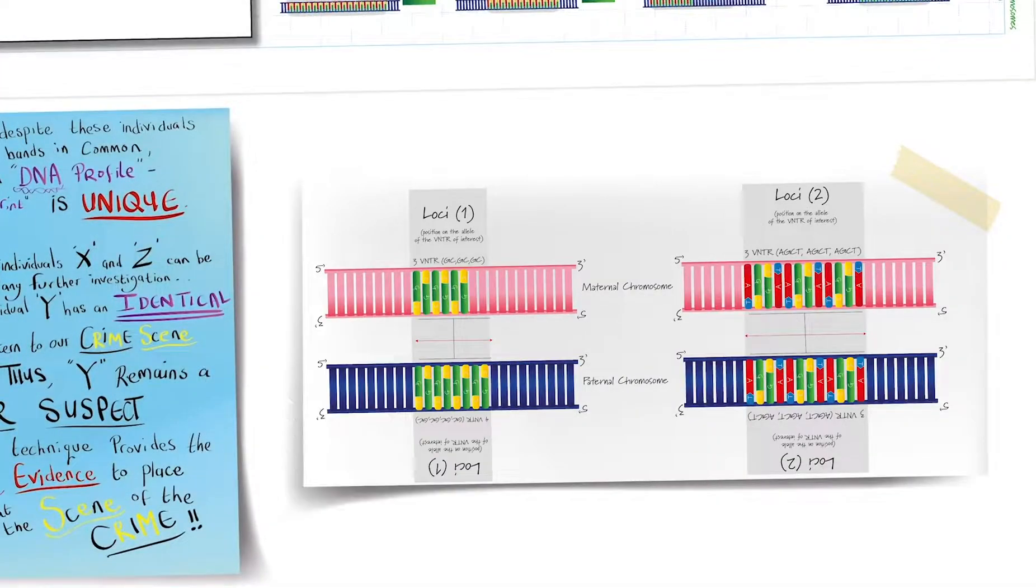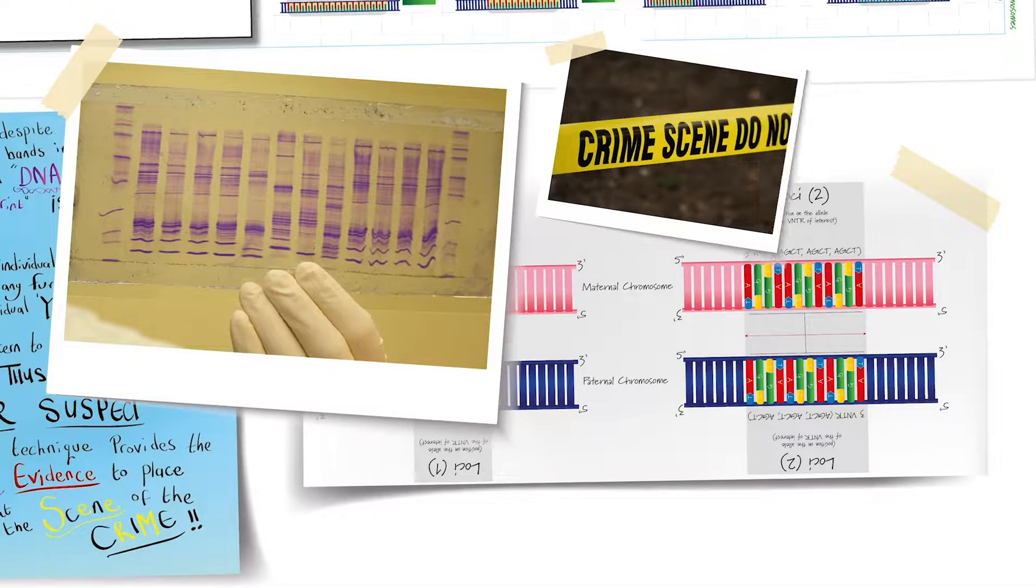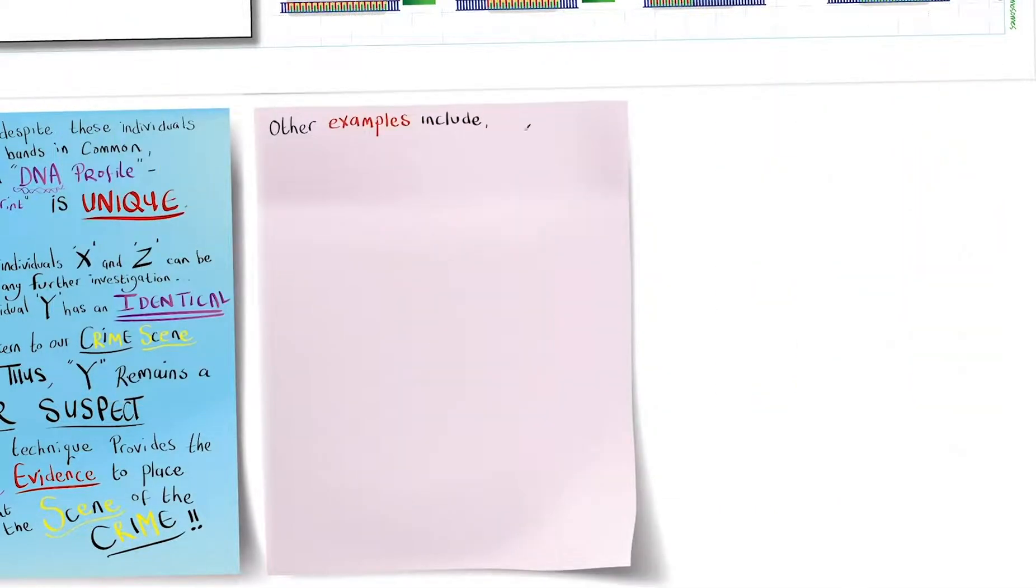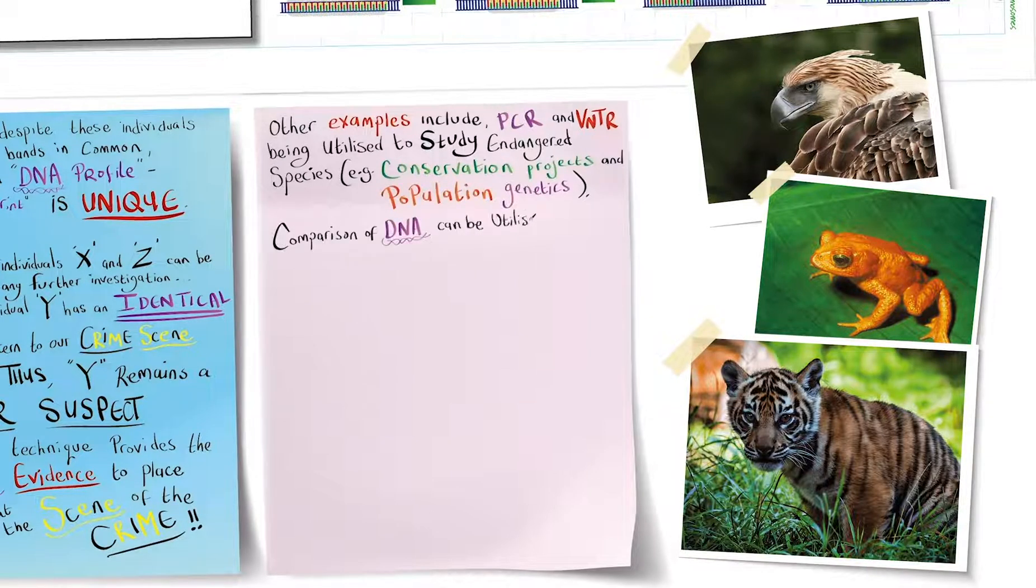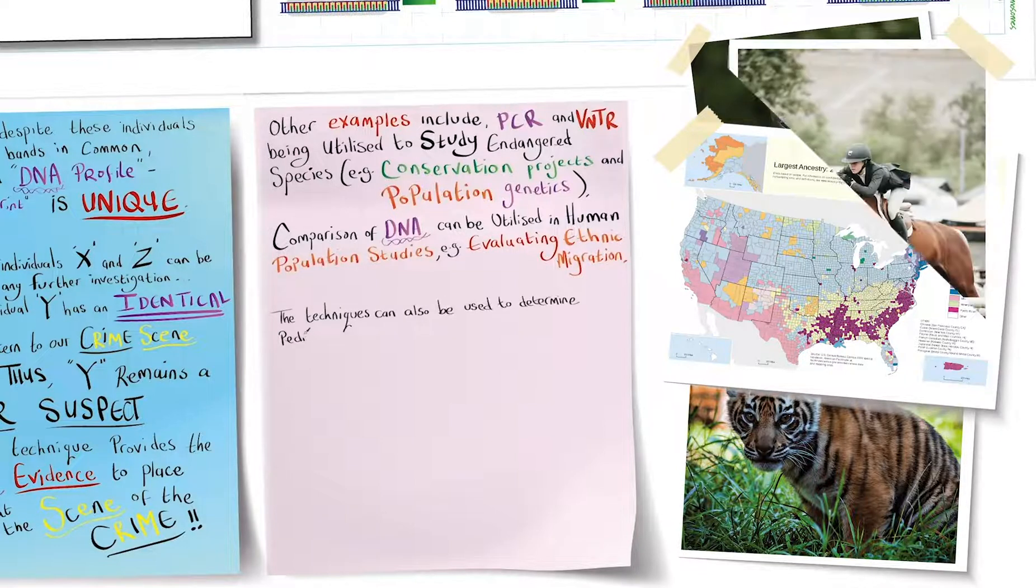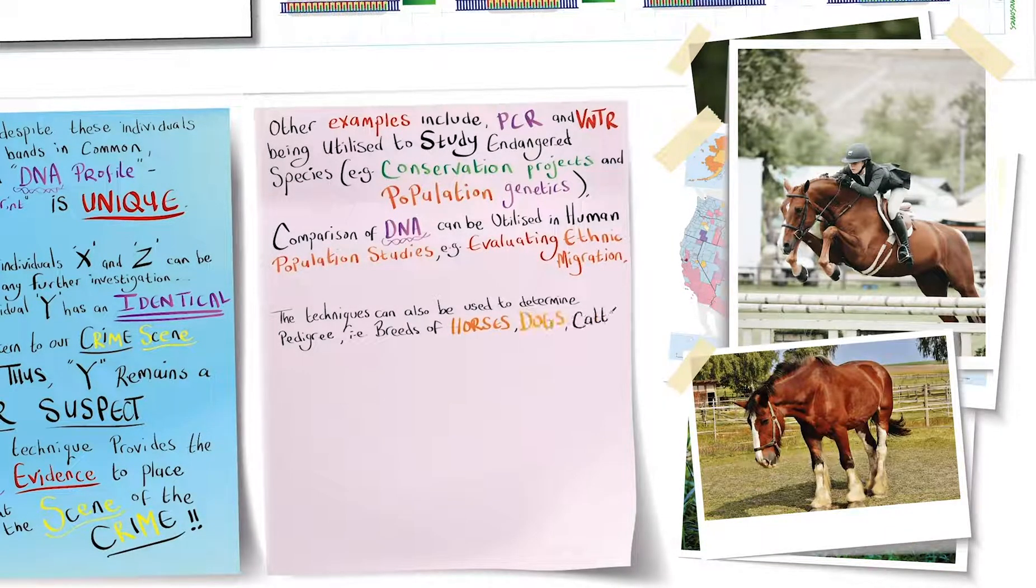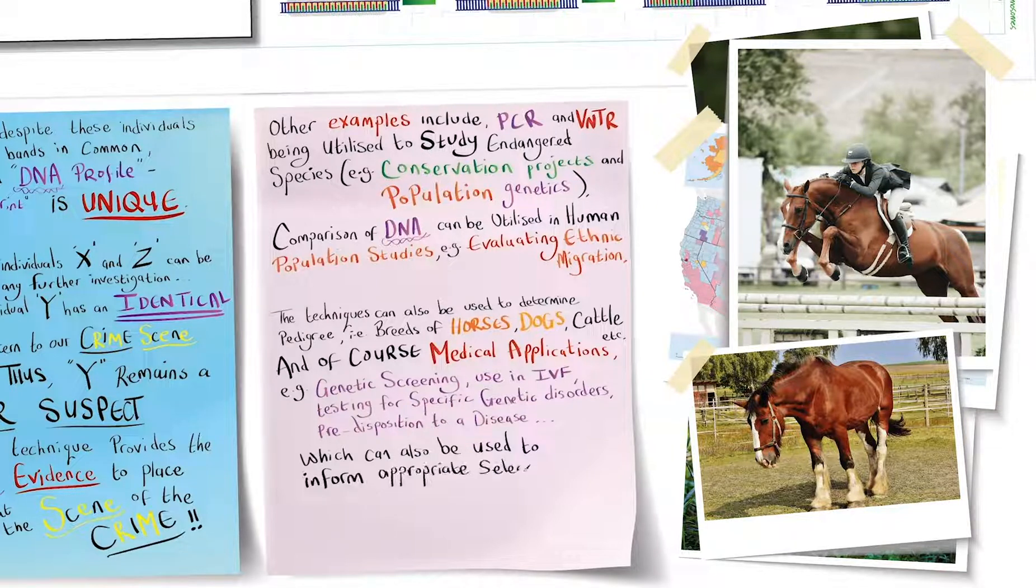So, as we have seen, VNTRs can be used to identify individuals by comparing the similarities and differences in their DNA, specifically these sequences of non-coding DNA. Whilst DNA fingerprinting is most commonly used in forensic analysis, the uses don't stop there. Other examples include PCR and VNTRs being utilised to study endangered species, for example, in conservation projects and population genetics. Comparisons of DNA can be utilised in human population studies, for example, evaluating ethnic migration. The techniques can be used to determine pedigree, breeds of horses or dogs or cattle. And, of course, we have medical applications, genetic screening or the use in IVF and testing for specific genetic disorders or predisposition to a disease, which can also be used to inform appropriate selections for clinical trials.